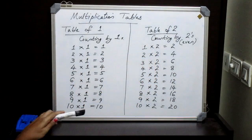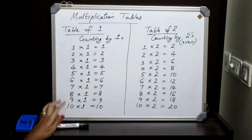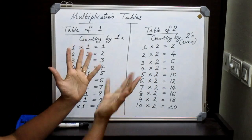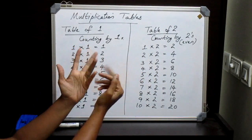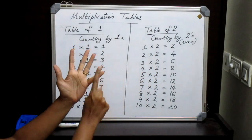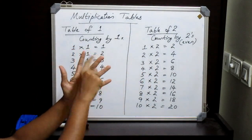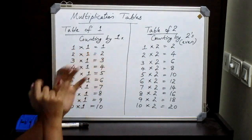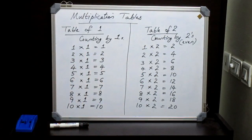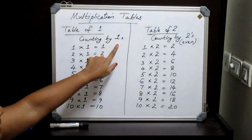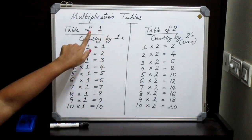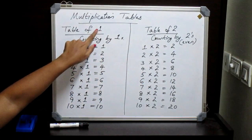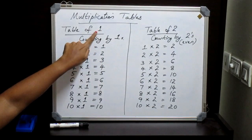We all know how to count numbers on our hands, right? We count by 1: 1, 2, 3, 4, 5 likewise. So the counting by 1's is nothing but the table of 1.